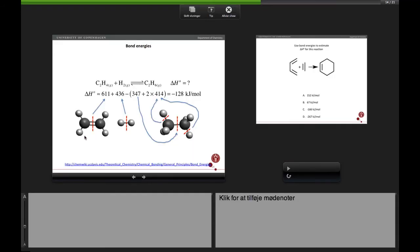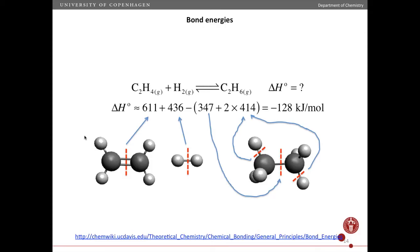So using these values I can then estimate the delta H for this reaction. To make ethane from ethene and H2 I have to break a CC double bond that costs this much energy, I have to break an HH single bond that costs this much energy, and then when I form a CC single bond I get back this much energy,